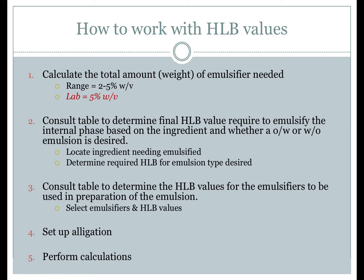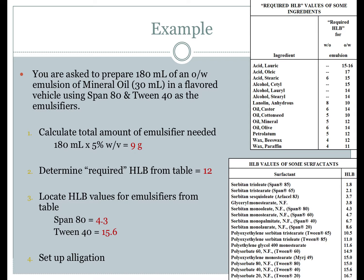Step one: calculate the total combined weight of all emulsifiers needed — typically 2–5% weight per volume; in Pharmacy Skills Lab, always 5%. Step two: consult the table to determine the target HLB value required to emulsify the internal phase based on the ingredient and desired emulsion type. Step three: consult the emulsifier HLB values table for the specific emulsifiers to be used. Step four: use the target HLB value and individual emulsifier HLB values to set up an allegation equation. Step five: solve the allegation to calculate the individual weights of each emulsifier.